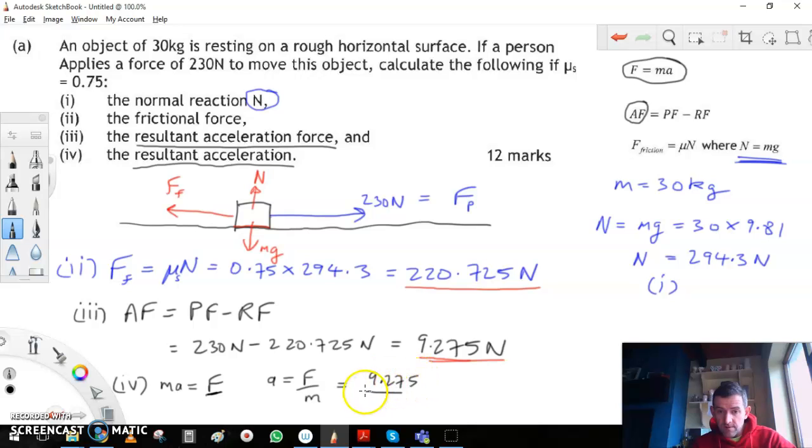And underneath we have our mass of 30. So 9.275 divided by 30, and we get 0.309 to three decimal places, and that's meters per second squared. That's the resultant acceleration, and that's 12 marks there for that.